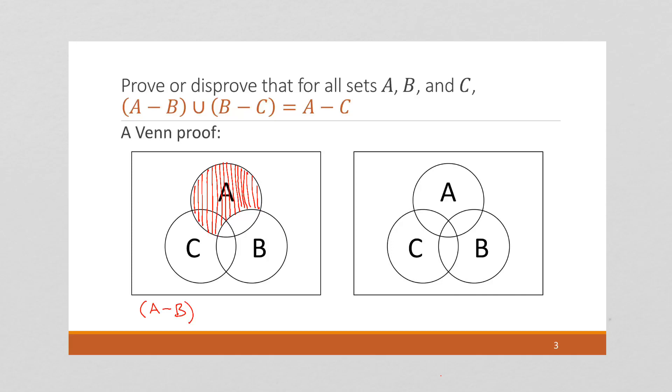Okay, the second part of this is B minus C. So I'm not going to worry, I'm going to treat these as two separate diagrams and use different colors, and then I'll combine them. So B minus C is going to be everything in B that's not in C.